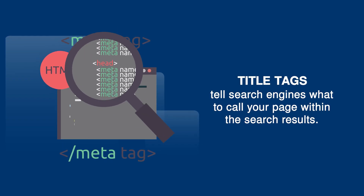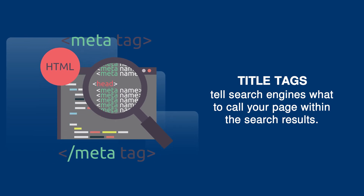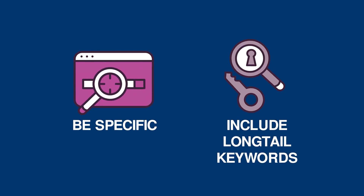Title tags tell the search engines exactly what to call your page within the search results. They also tell the user exactly what your page is about. Be specific and try to include some long-tail keywords that are relevant to the content. Also play around with the vocabulary that you use around these keywords, but make sure that they're clear and concise. You can even measure the results by doing some A-B testing.